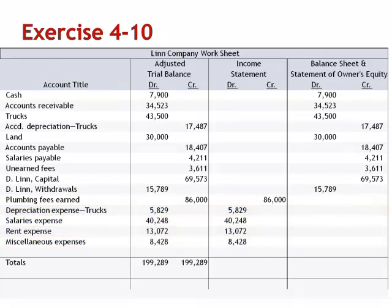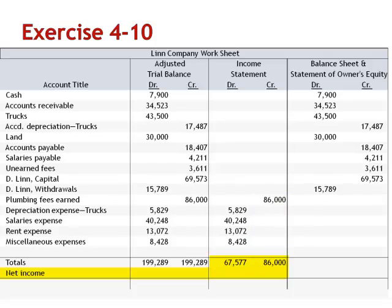When we look at the income statement column, we have $67,577 in debits and $86,000 in credits. Expenses of $67,577 when subtracted from revenues of $86,000 is net income of $18,423.